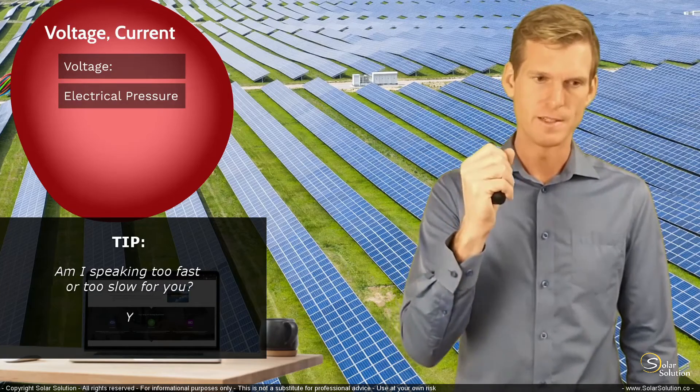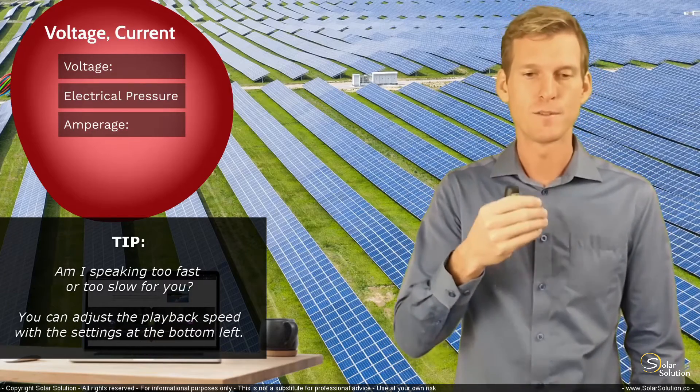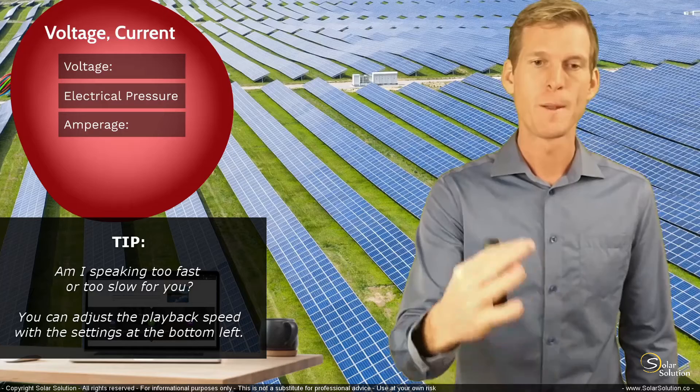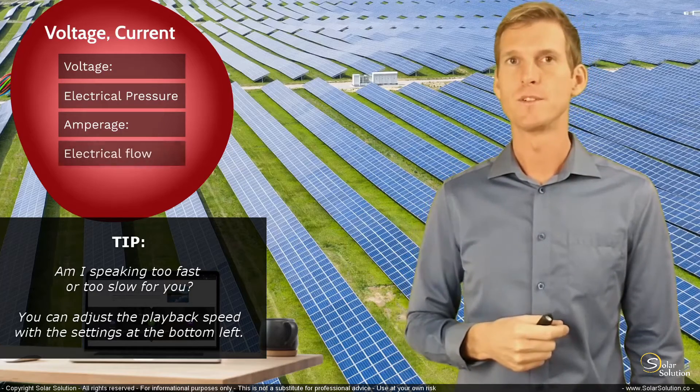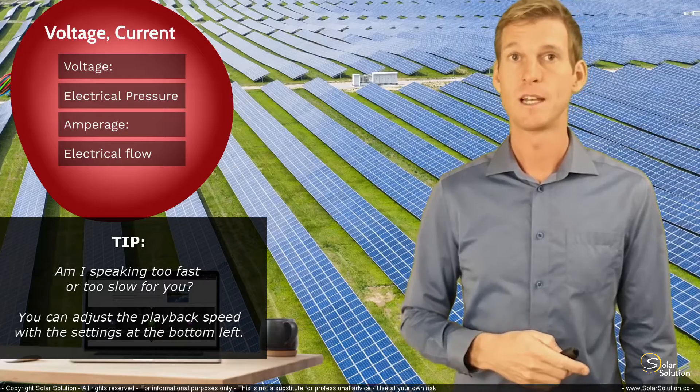Amperage, you can imagine that amperage is a certain amount of flow of electricity. It is the electrical equivalent of a flow, a volume flow of water or something like that. So voltage is electrical pressure, amperage is electrical flow.